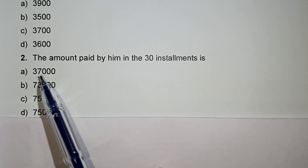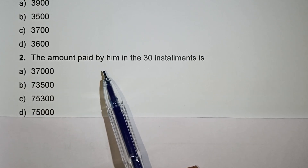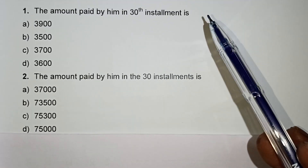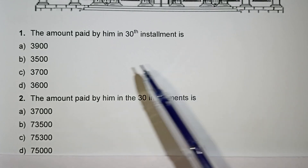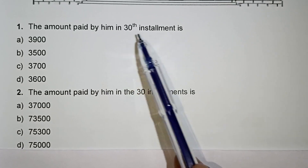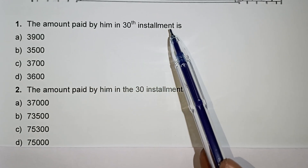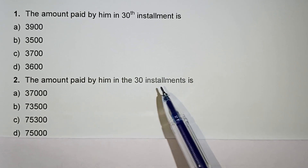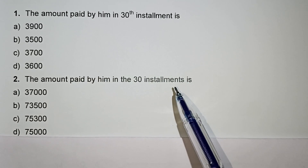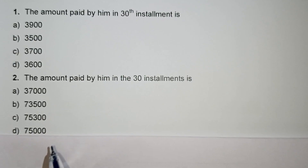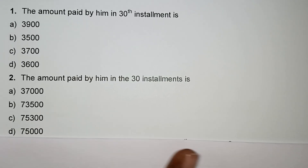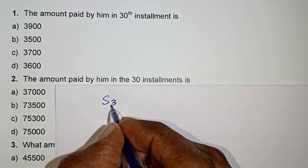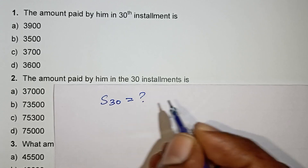Look at the next question. The amount paid by him in the 30th installment — compare this with the previous question. Here they are asking the total amount paid by him up to the 30th installment, so they are asking us to find S30.